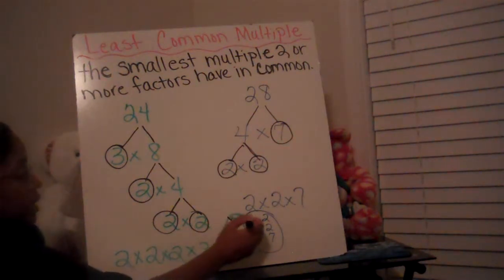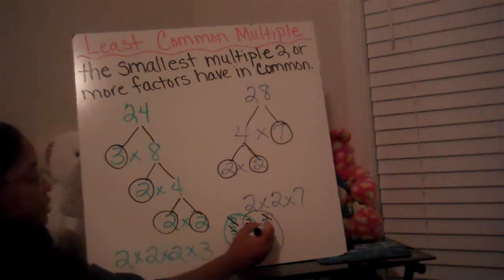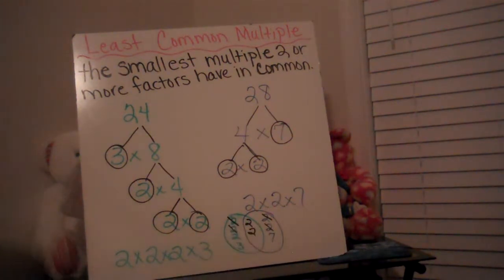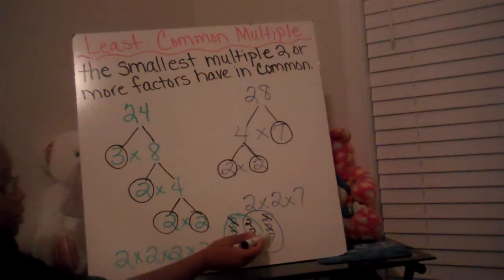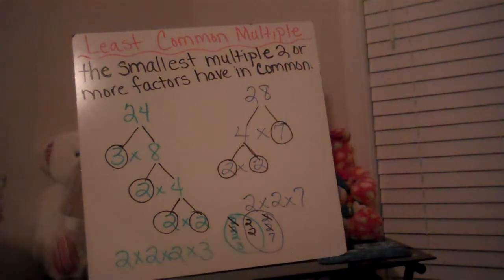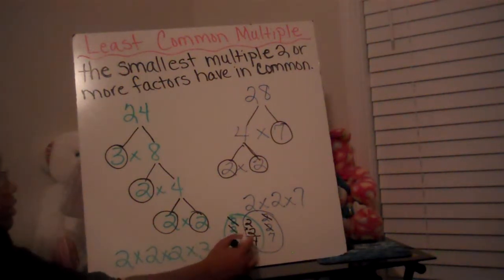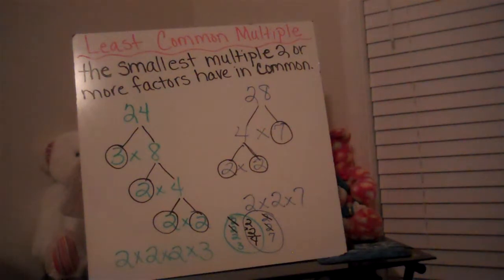I have a green 2 and a blue 2 — that's a 2 in common. Another green 2 and a blue 2 — that's a 2 in common. I have a green 2 but no more blue 2's, and a green 3 but no blue 3's, so those numbers are not in common. The numbers that are in common get multiplied together: 2 times 2 is 4. That 4 is my greatest common factor, so the GCF is 4.